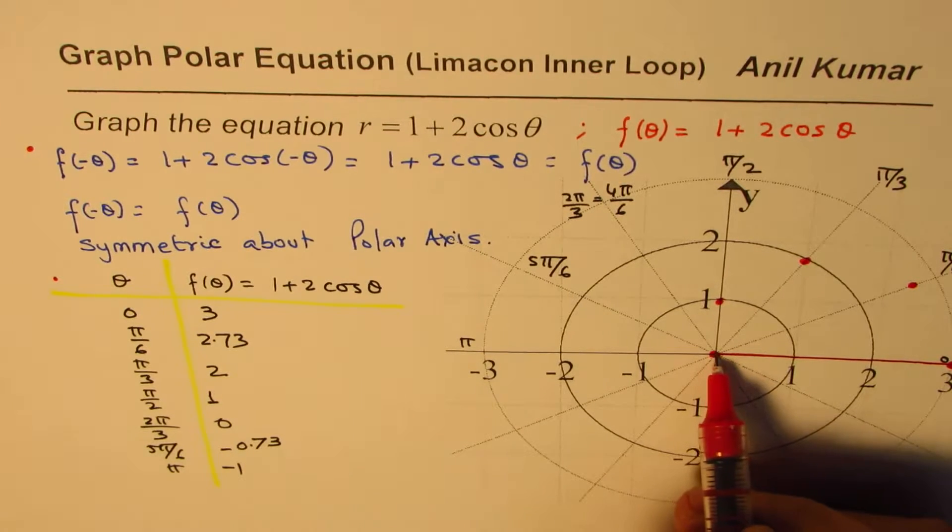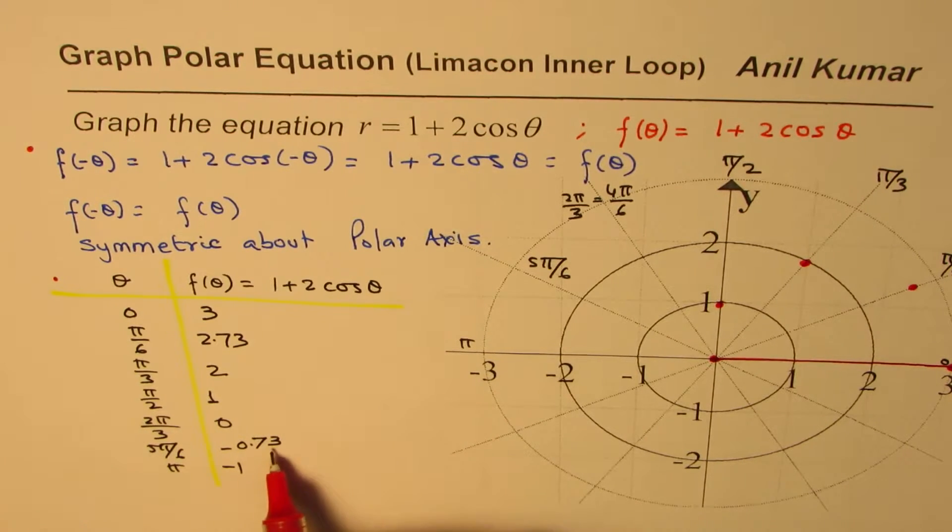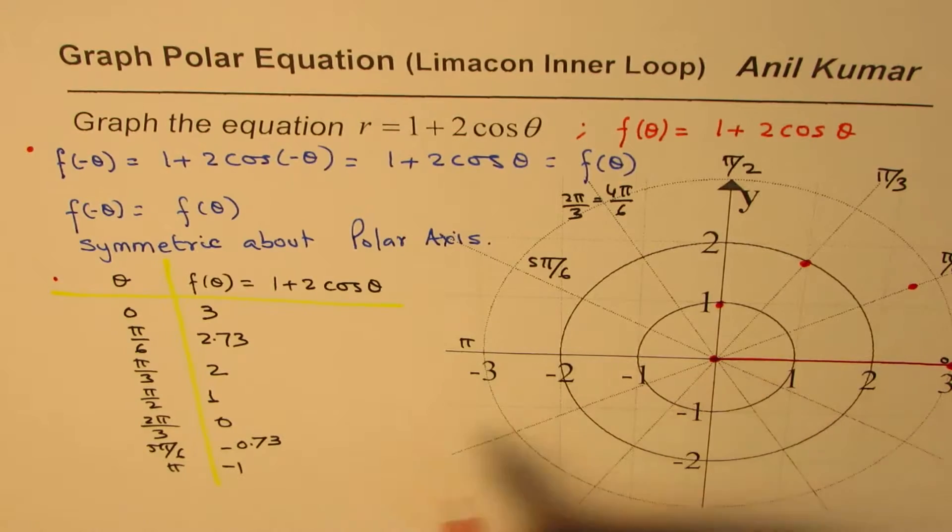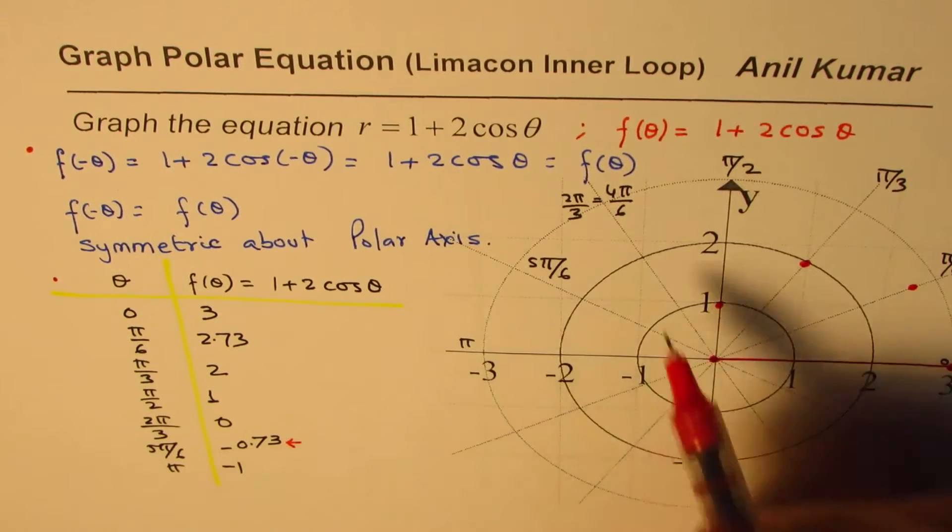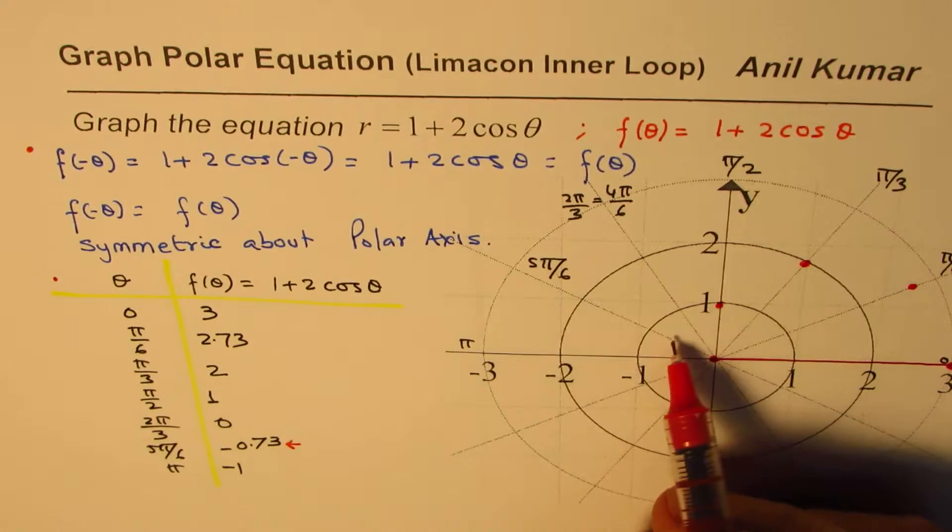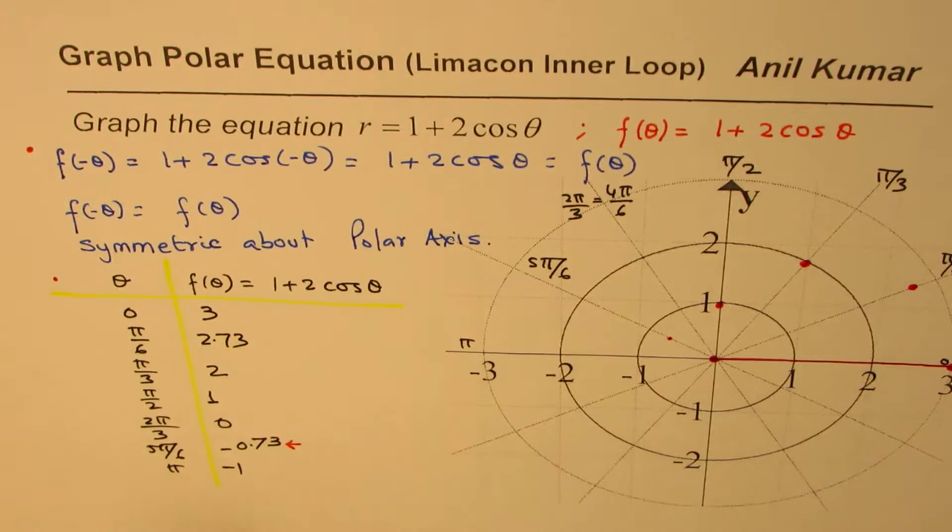And 2 pi by 3 is 0. So that brings you to 0, we come back to 0 here. And then we have 5 pi by 6 is minus 0.73. So how do you do minus 0.73? So what we do here is at 5 pi by 6, we know 0.73 is here. But minus means it has to be reflected.